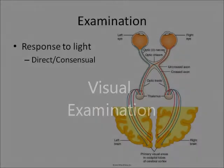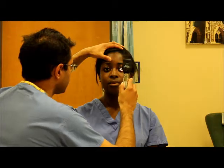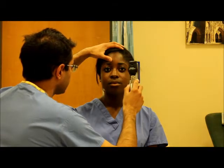The visual examination for a patient can be broken down into many steps. The first will be the response of the pupils to light, both in a direct and indirect, and consensual manner.